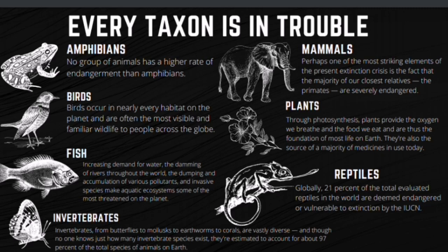No group of animals has a higher rate of endangerment than amphibians. Scientists estimate that a third or more of all roughly 6,300 known species of amphibians are at risk of extinction. The current amphibian extinction rate may range from 25,039 to 45,474 times the background extinction rate. Frogs, toads, and salamanders are disappearing because of habitat loss, water and air pollution, climate change, ultraviolet light exposure, invasive exotic species, and disease.